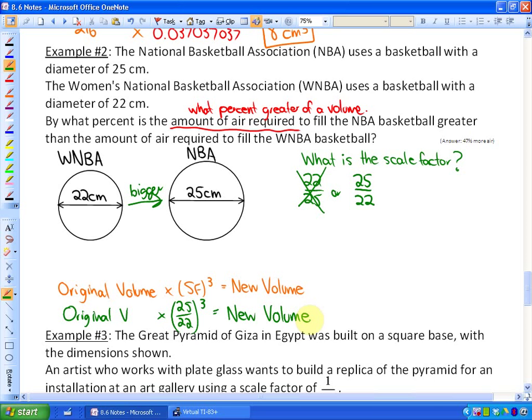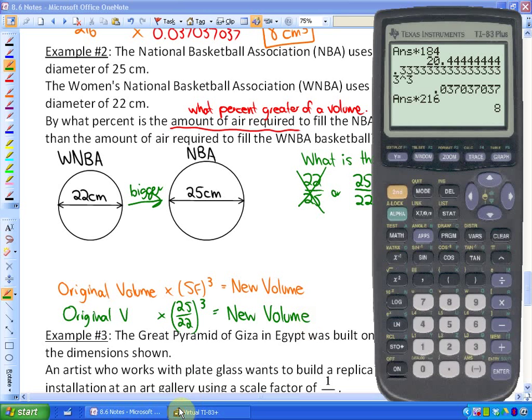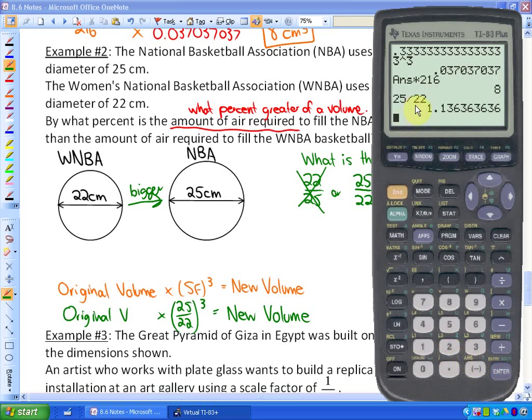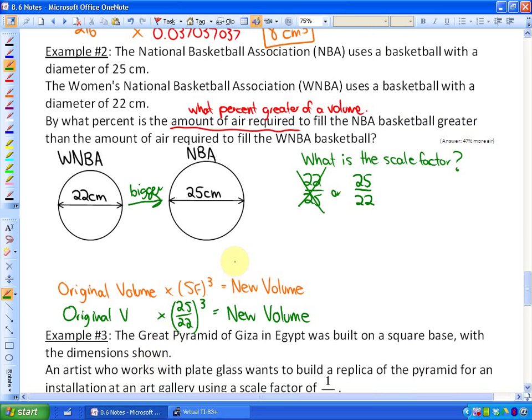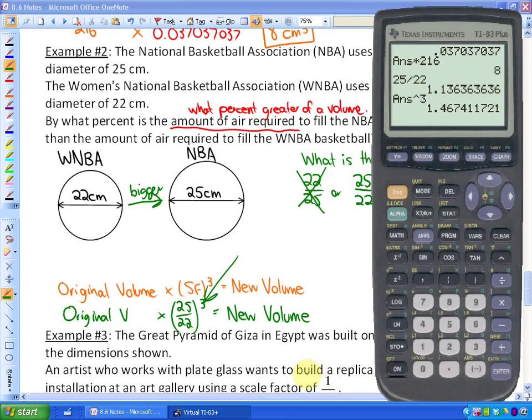We don't know the volumes, but this will be helpful. If we figure out what 25 over 22, so I'm just going to make that a decimal. Here's 25 divided by 22. And if I cube that, here's what we have. This is equivalent to 1.467.